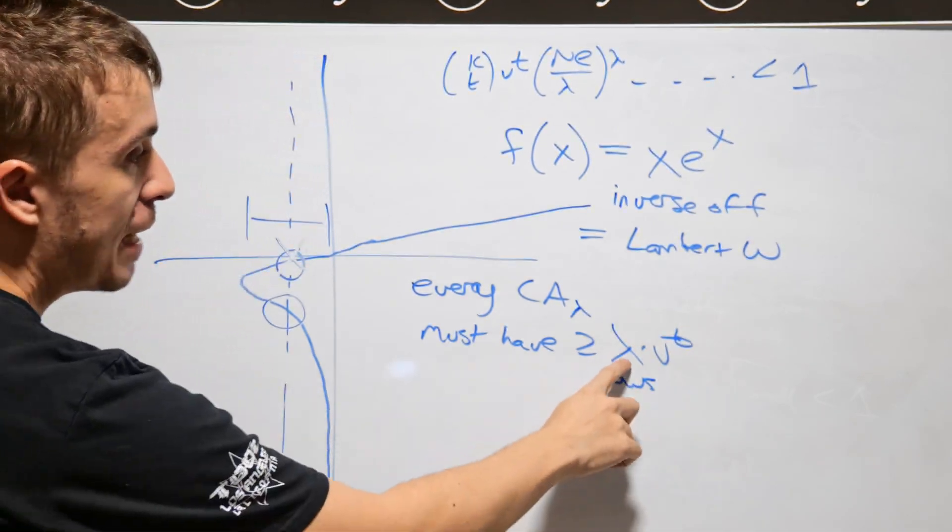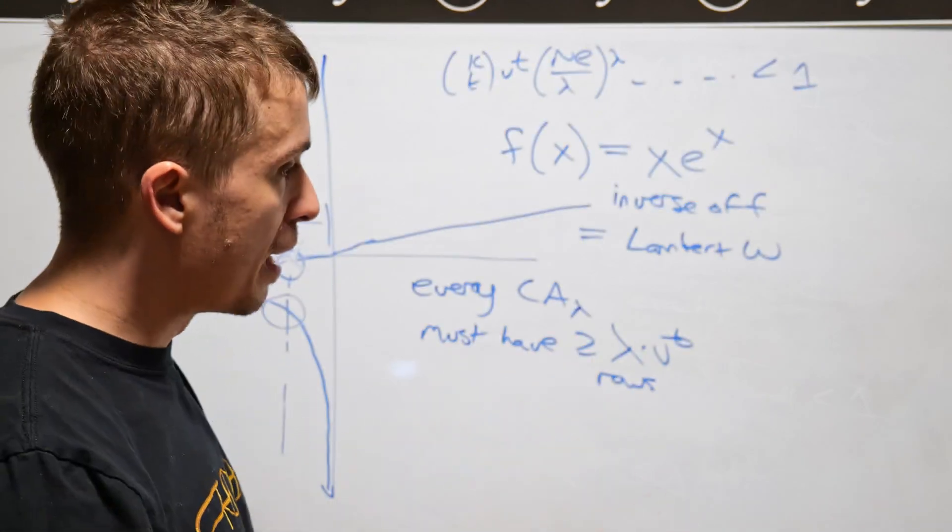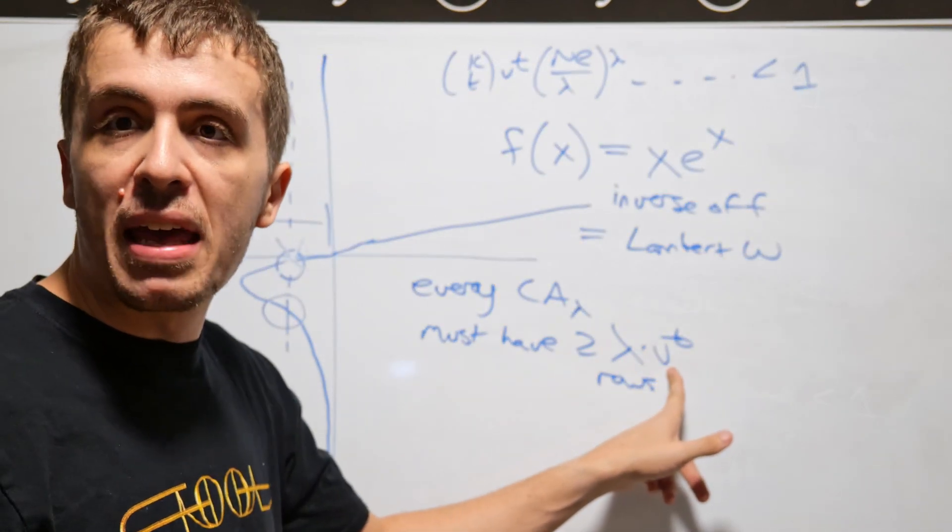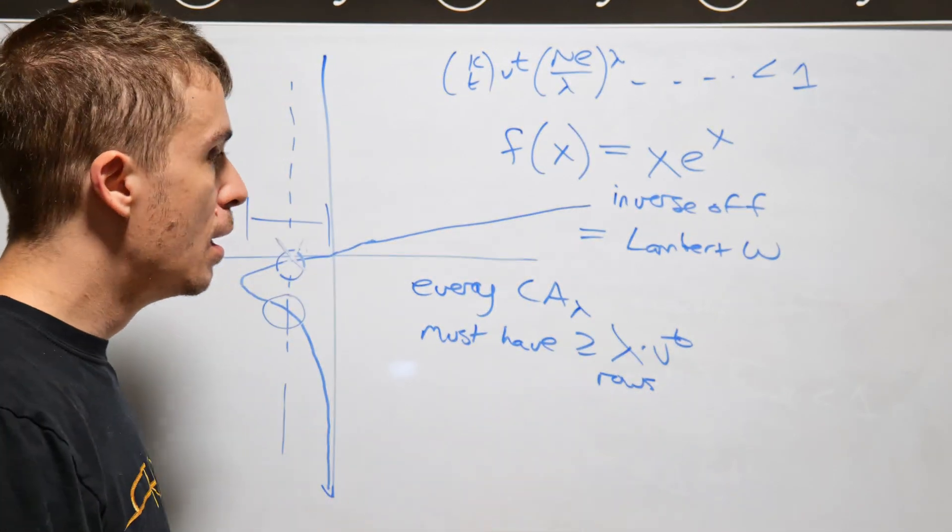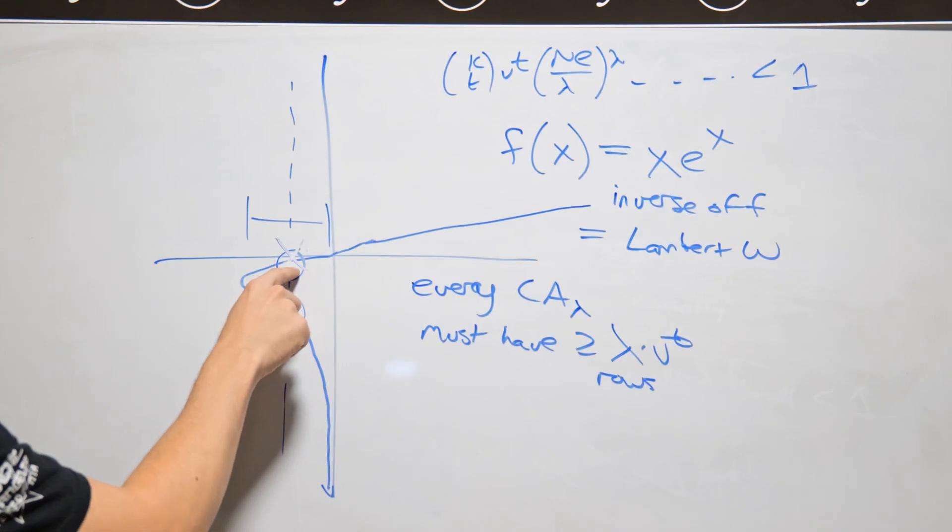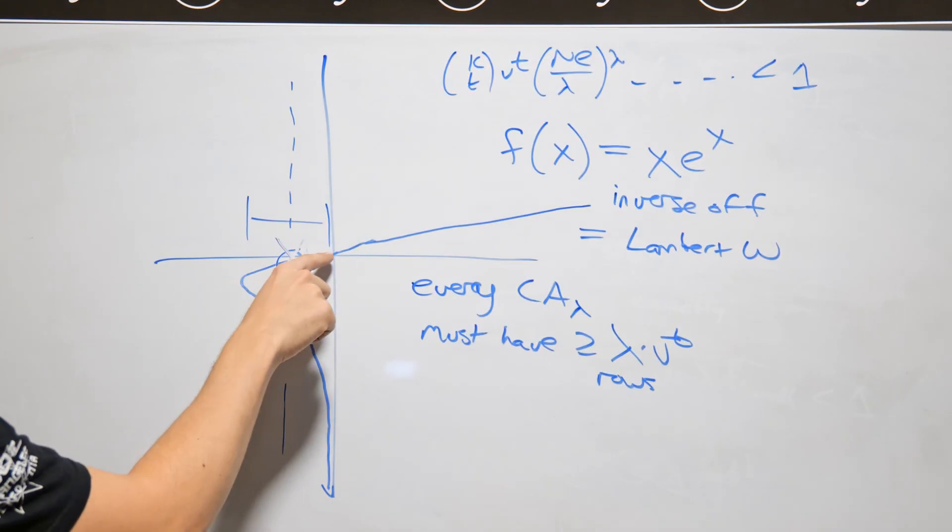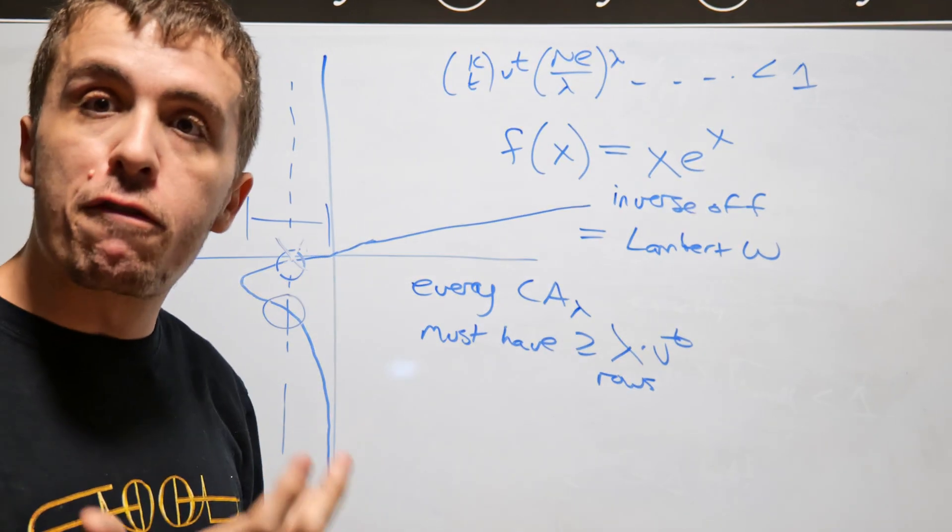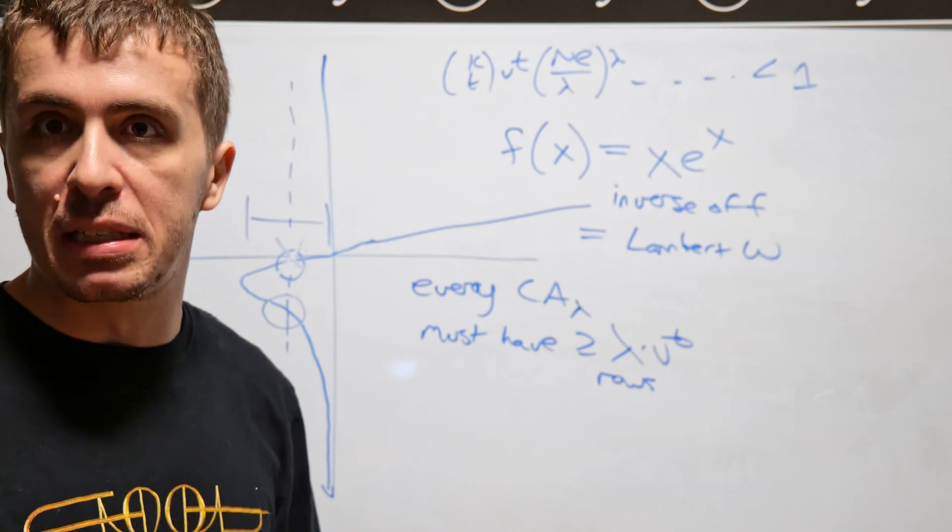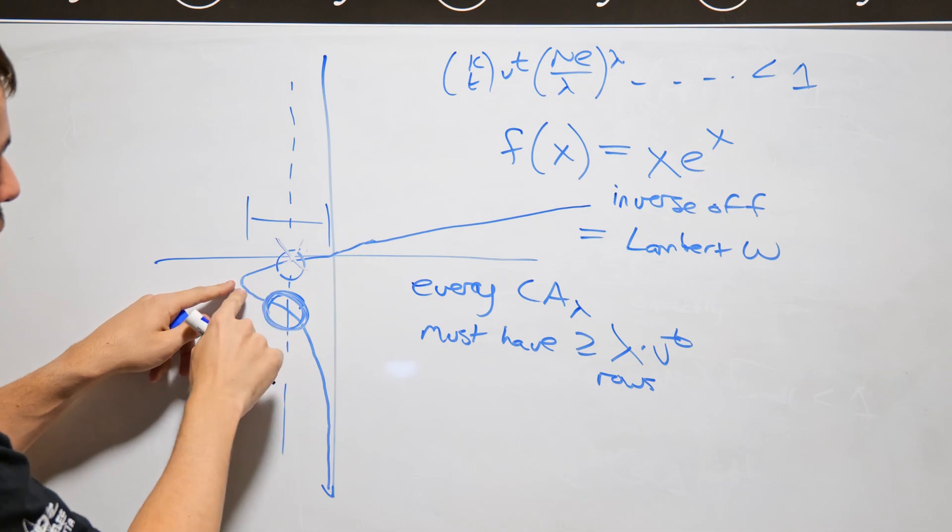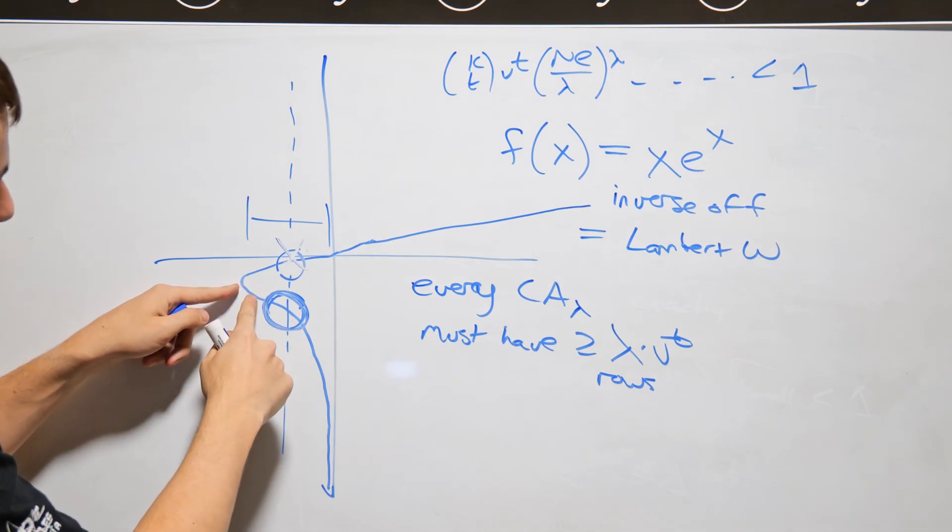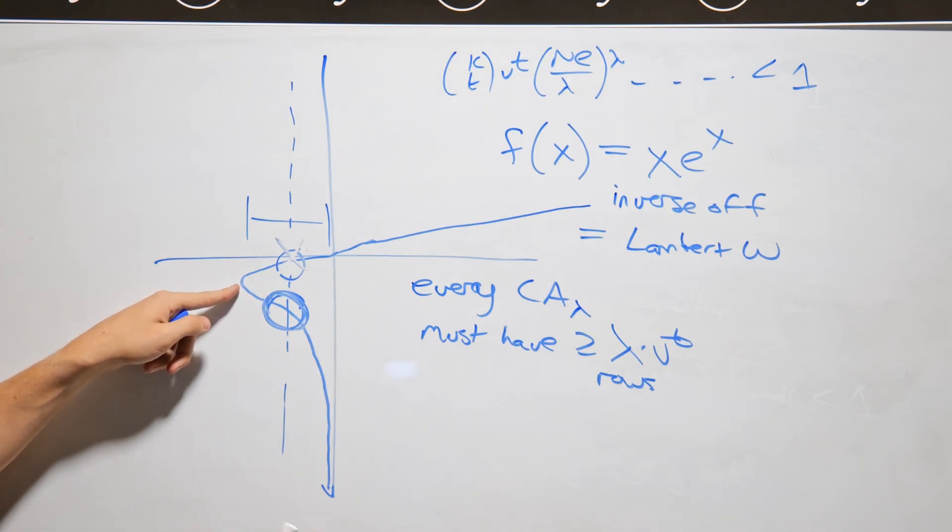Because lambda, you must have lambda copies of every single thing and there are v to the t things that you need to find and so therefore you must have at least that many rows. But it turns out that if you pick that top solution no matter where it is, you will always have fewer than lambda times v to the t rows and so you can instantly throw it away. You must be in this regime right here which is after this little inflection point over here and on this bottom curve.